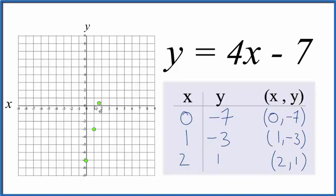We have x is 2, y is 1. x is 2, y is 1, and you can see they all line up. Let's put a line through that. We'll put arrows to show it goes to infinity, and that's the graph for y equals 4x minus 7.